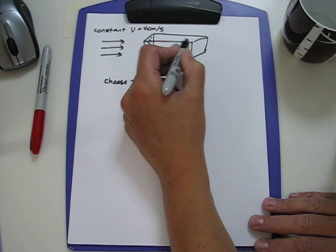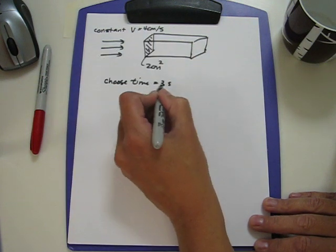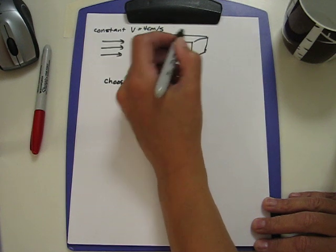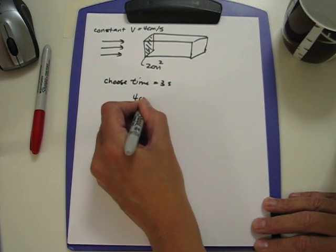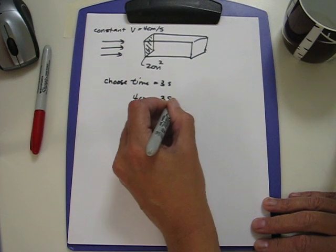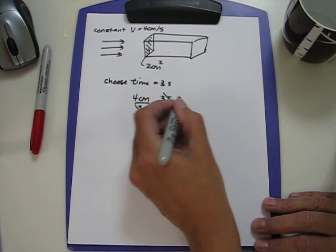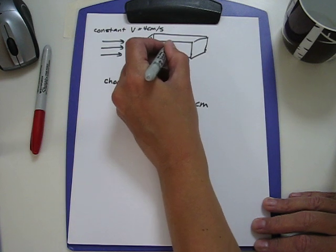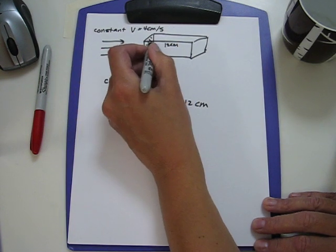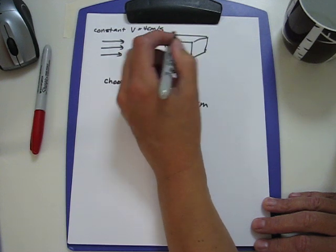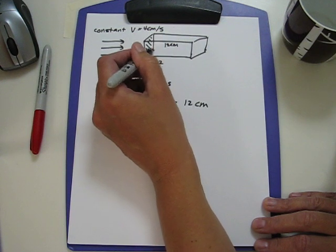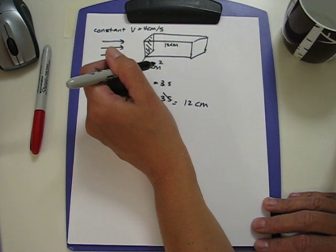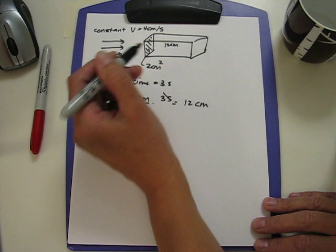The fluid is traveling at 4 centimeters per second, so over a time of 3 seconds, this fluid would have gone a distance of 4 centimeters per second times 3 seconds, or 12 centimeters. Now we know the fluid has gone 12 centimeters, so we can calculate the total volume that has passed through this surface by calculating the volume of the parallelepiped.